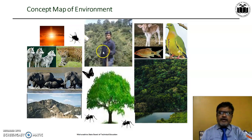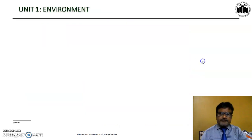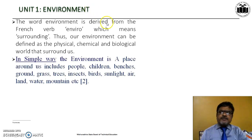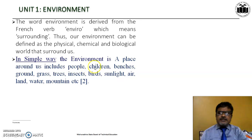In this concept map, you can see the biotic as well as abiotic components. The word environment is derived from the French word 'enviro', which means surrounding. Therefore, our environment can be defined as the physical, chemical, and biological world that surrounds us. In simple terms, the environment is a place around us including various biotic and abiotic components.